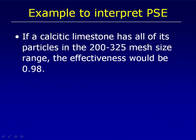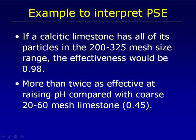Particle size efficiency is a very simple concept. For example, if we have calcite in the 200 to 325 mesh size range, the effectiveness would be 98% of what we would see from the same amount of reagent calcium carbonate. And that size fraction would be twice as effective at raising pH compared with 20 to 60 mesh limestone.